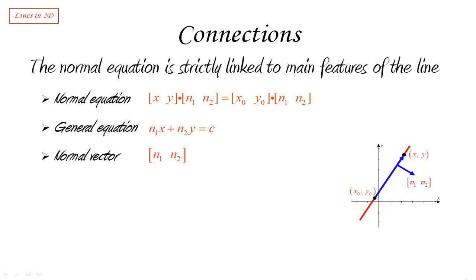But if I have a two-dimensional vector and I know that it's normal or perpendicular to the line, I can construct another vector right away which is parallel to the line. All I have to do is construct a vector perpendicular to the normal. And we know how to do that.